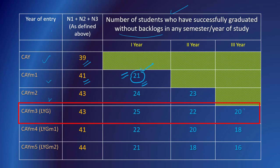Similarly, for the batch that already graduated as last year graduates, 20 students out of 43 never received a compartment throughout the entire program. In the first year there were 25 such students with no backlog; then out of those 25, 22 completed the next year without any backlog; and finally 20 students never received a compartment in any course throughout the program.